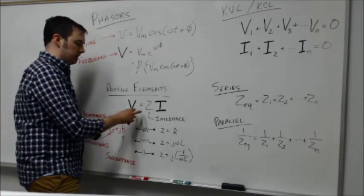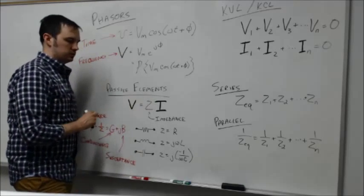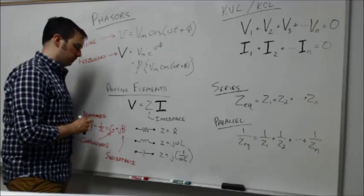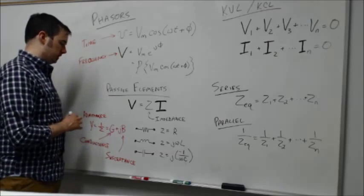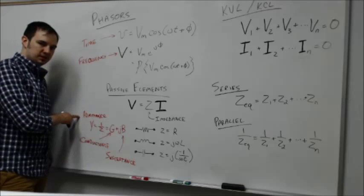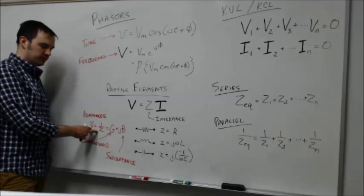That would give us the total relationship relating the voltage and the current. We talked about admittance. Admittance is simply the inverse of the impedance.